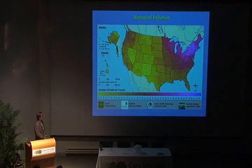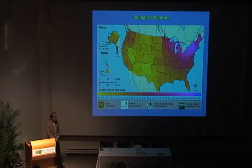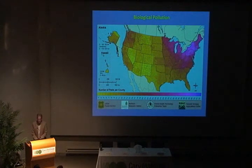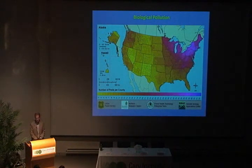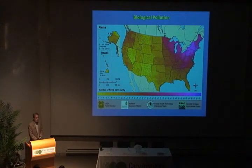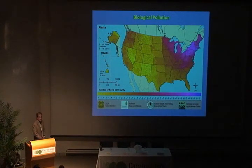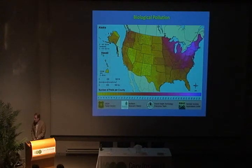Charlie mentioned that these are being distributed everywhere, and that's true, but that doesn't mean the distribution is even. Here's a map that Sandy Leaphold of the Forest Service put together showing the abundance of forest pests and pathogens county-wide in the U.S. You can see that we are ground zero for this. The question comes up as to why — why are there so many here?